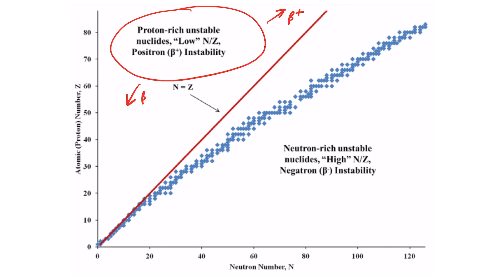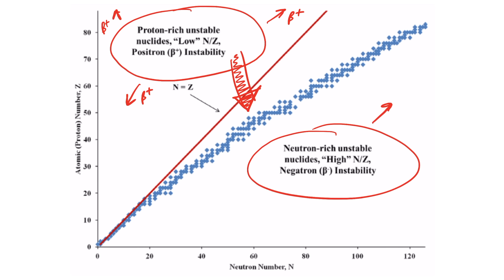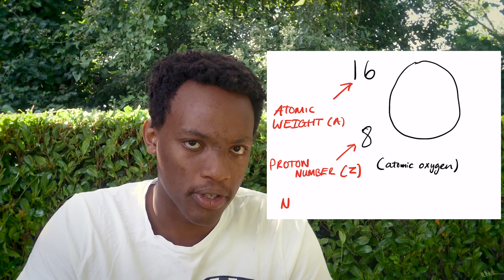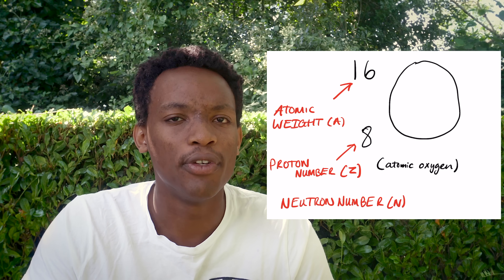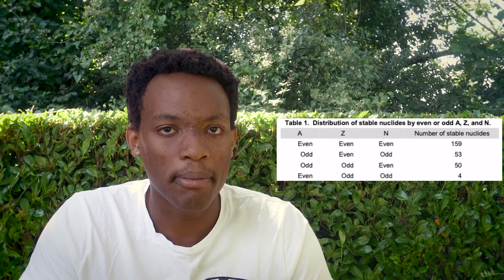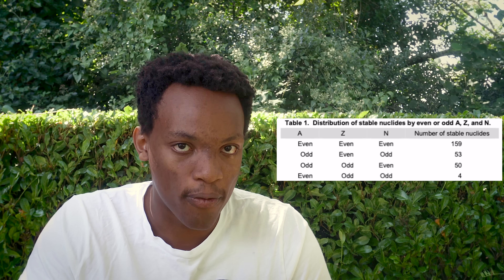By taking the chart of nuclides and removing the unstable elements, we can see what we call the valley of stability. Elements with more protons than neutrons will decay by electron capture to lower themselves into the valley. Elements with more neutrons will decay by electron emission to do so. Surely, if we can spot a pattern between stable nuclei, we can build a model which predicts that technetium is unstable. We can start by comparing whether their proton number, neutron number, and atomic weight are even or odd.